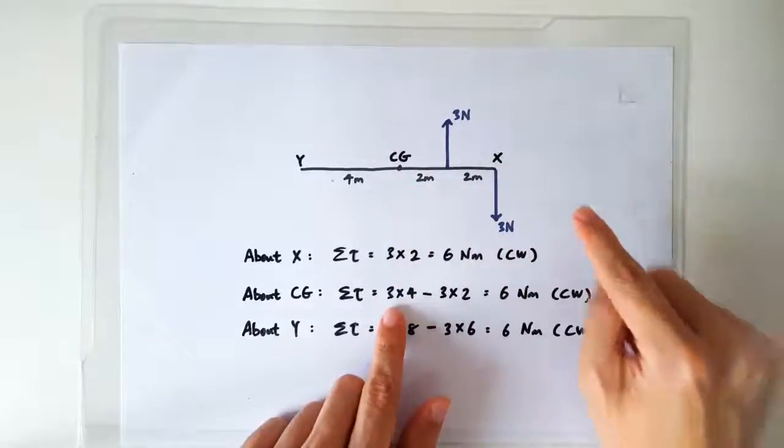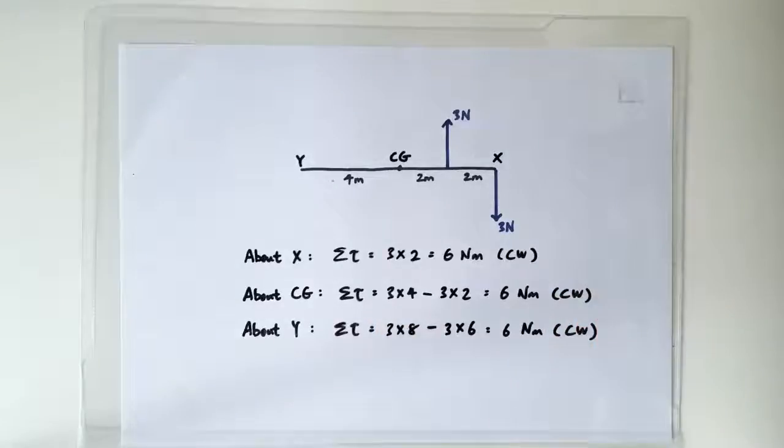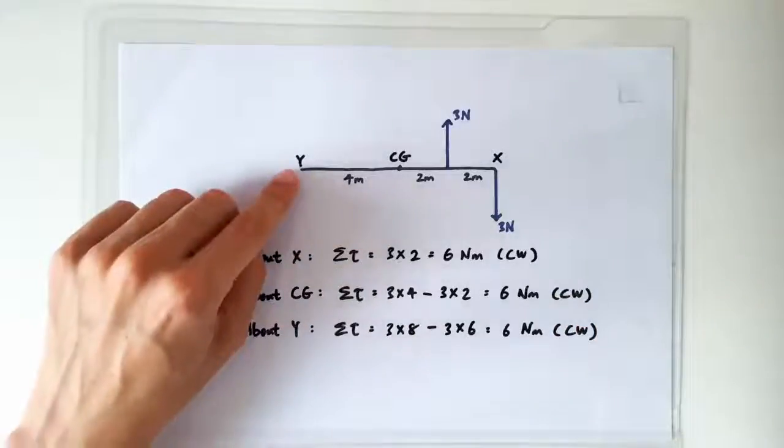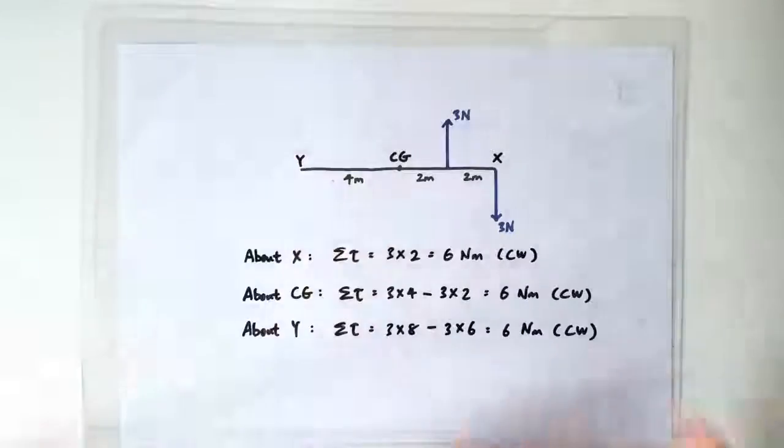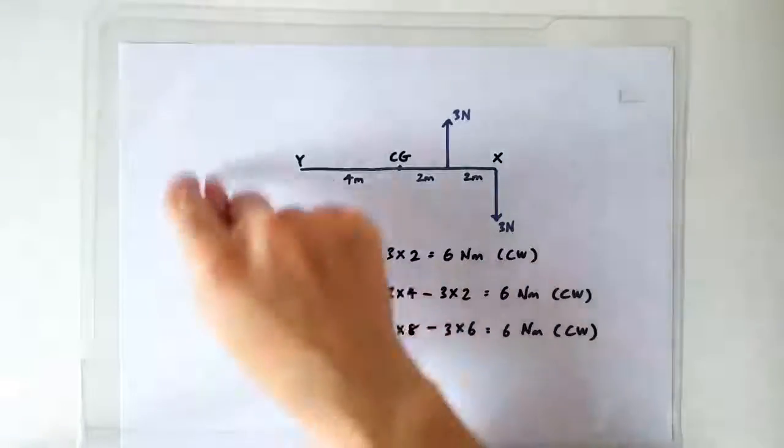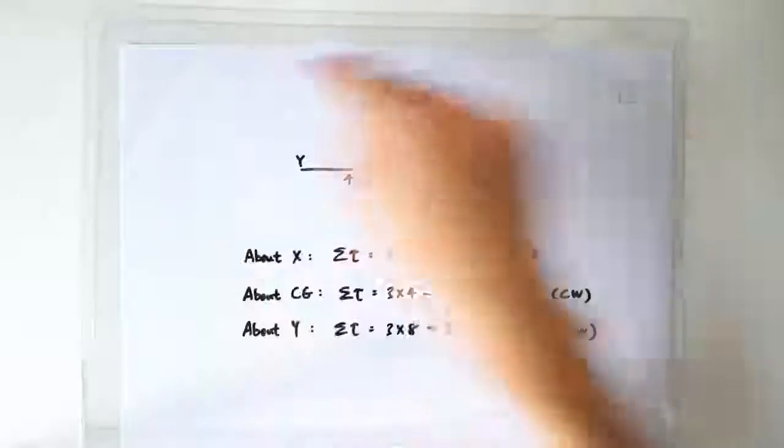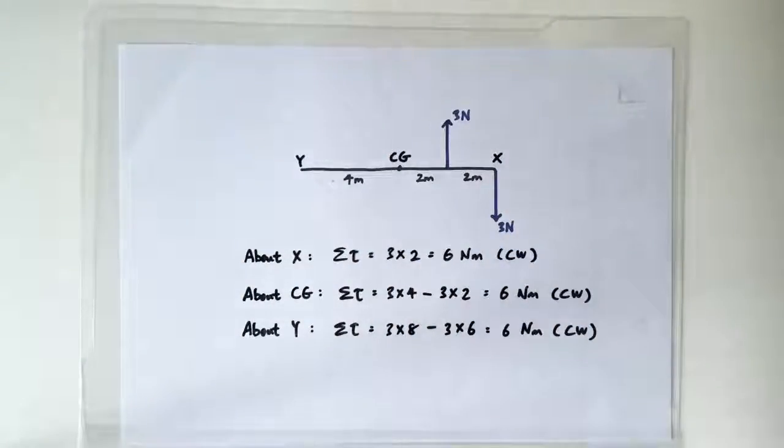If you calculate the net moment about the CG of the rod, you're going to get, again, 6 newtons meters clockwise. If you calculate the net moment about the left end of the rod, you're still going to get 6 newtons meters clockwise. In fact, you can choose your pivot to be anywhere. You will still calculate the net moment to be 6 newtons meters clockwise.